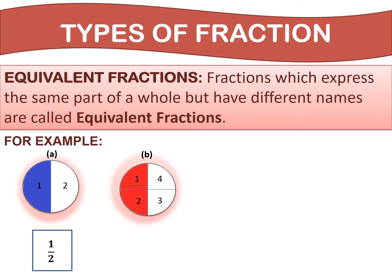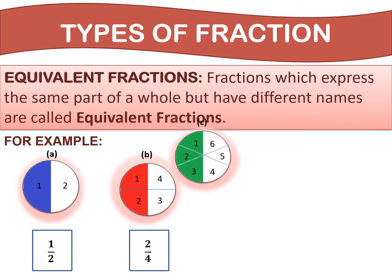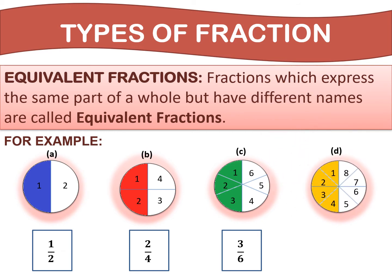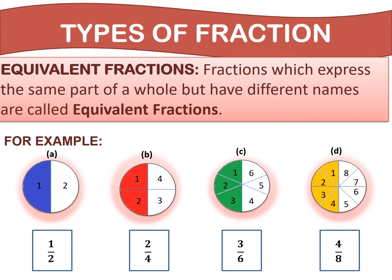In figure B, the circle is divided into four equal parts, so the fraction of the red part is two upon four. In figure D, the circle is divided into eight equal parts, so the fraction of the yellow part is four upon eight. So, what do you observe?